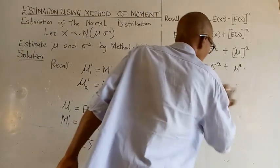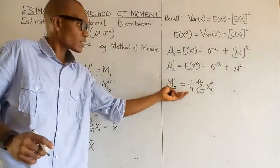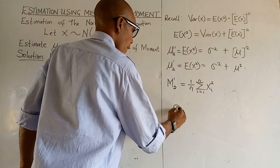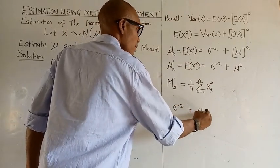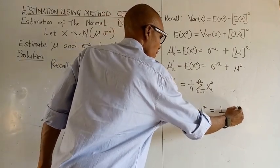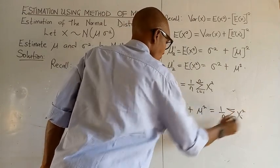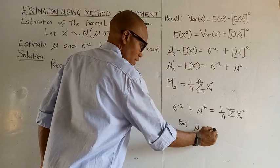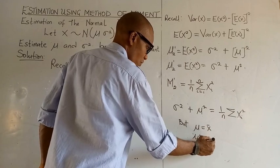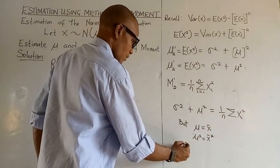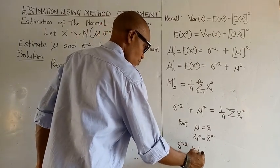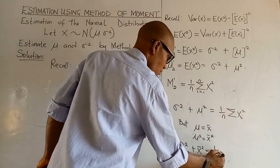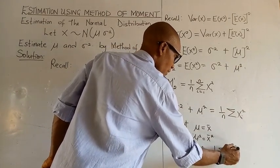So what we do is equate the second population moment with the second sample moment. So equating these, we have variance plus mu squared to be equal to 1 over n, summation of Xi squared. Since mu is equal to x-bar, that means mu squared is equal to x-bar squared. So variance plus x-bar squared is equal to 1 over n, summation of Xi squared.